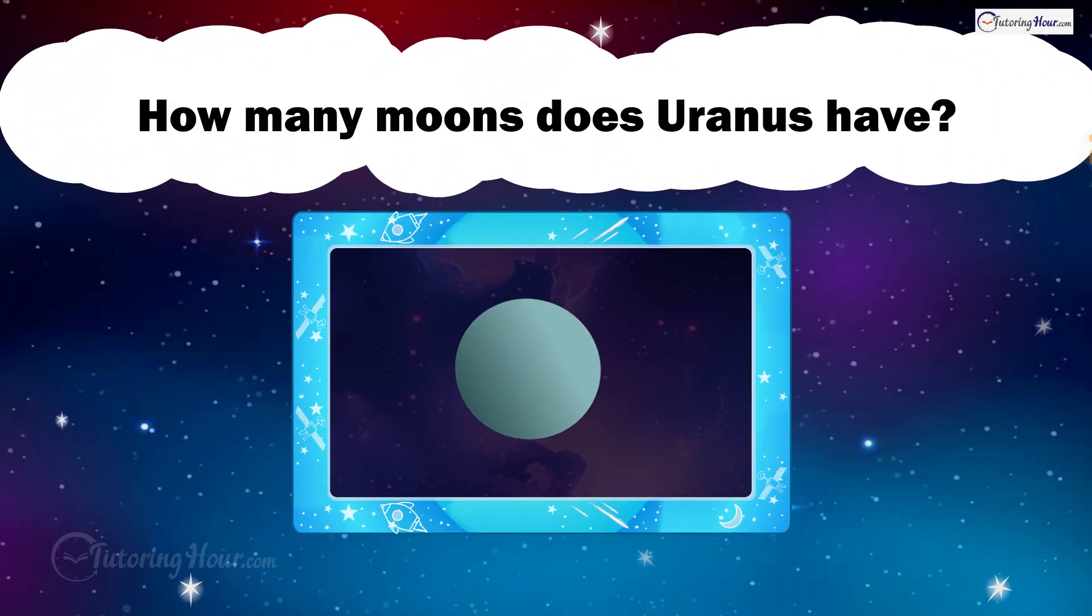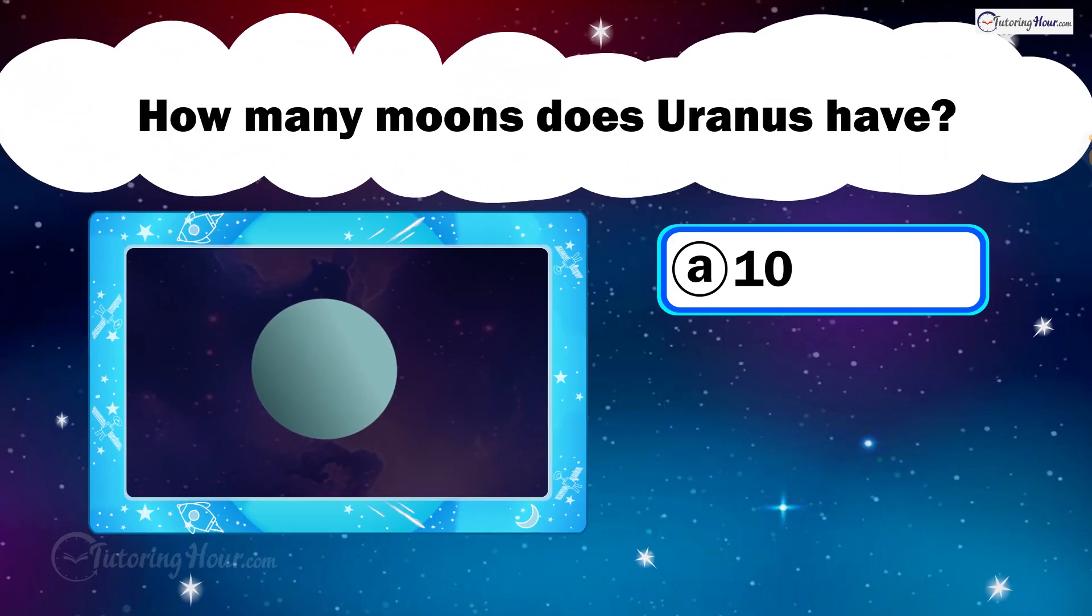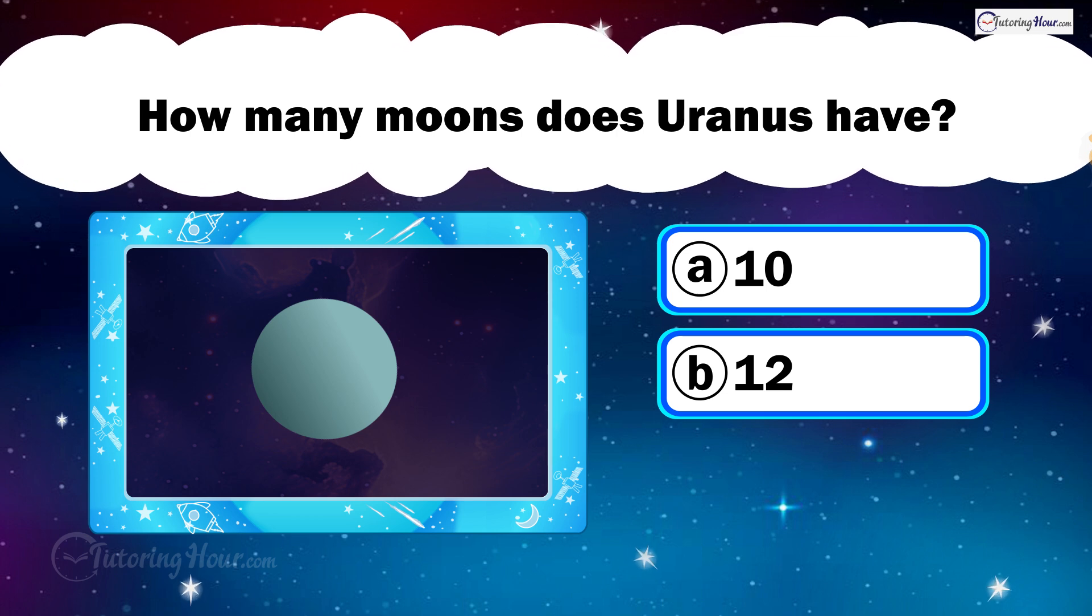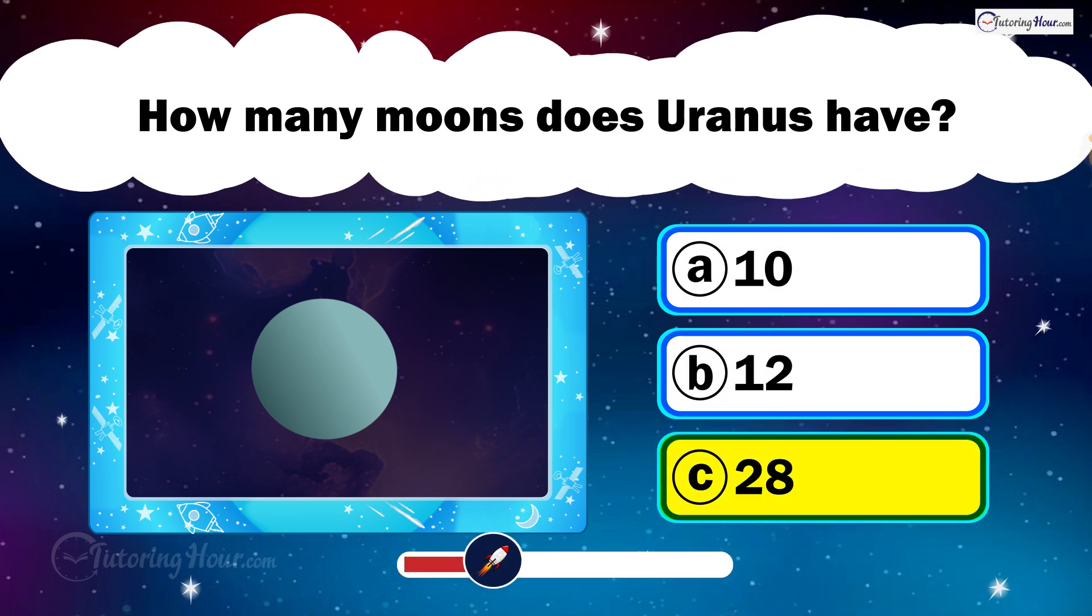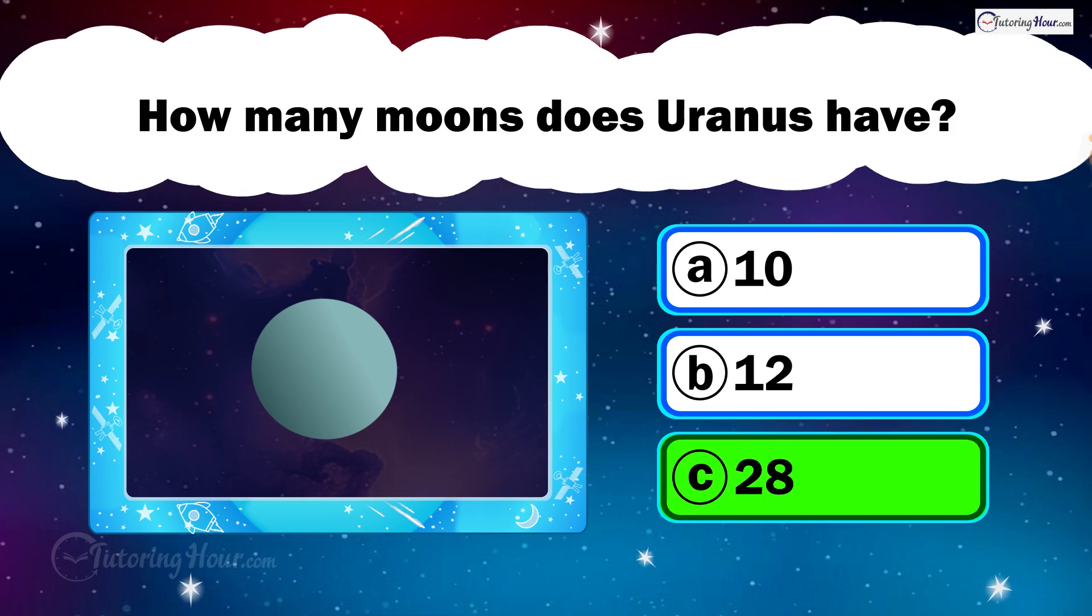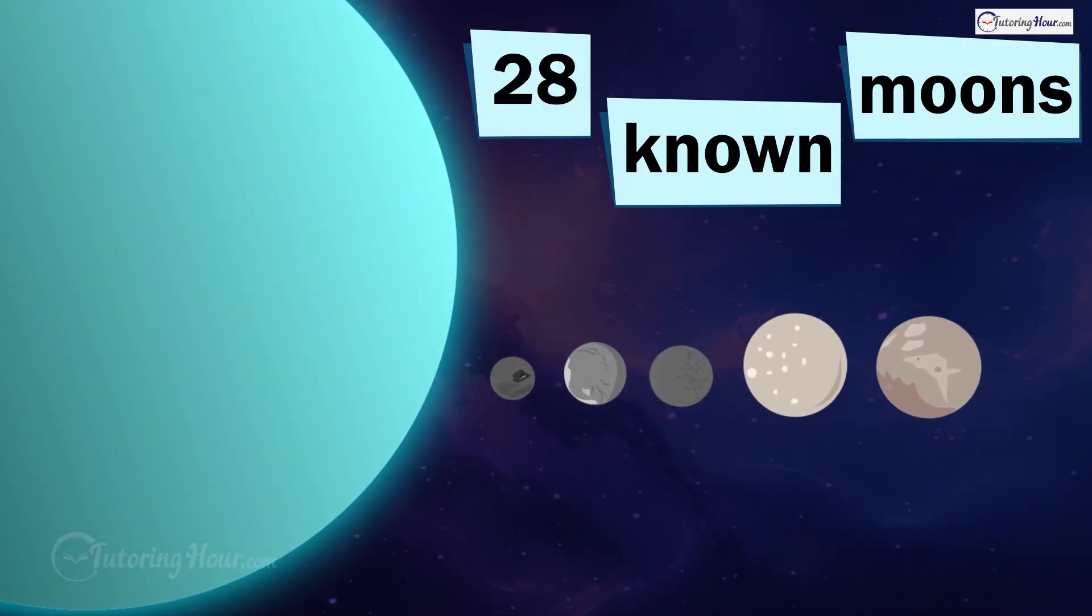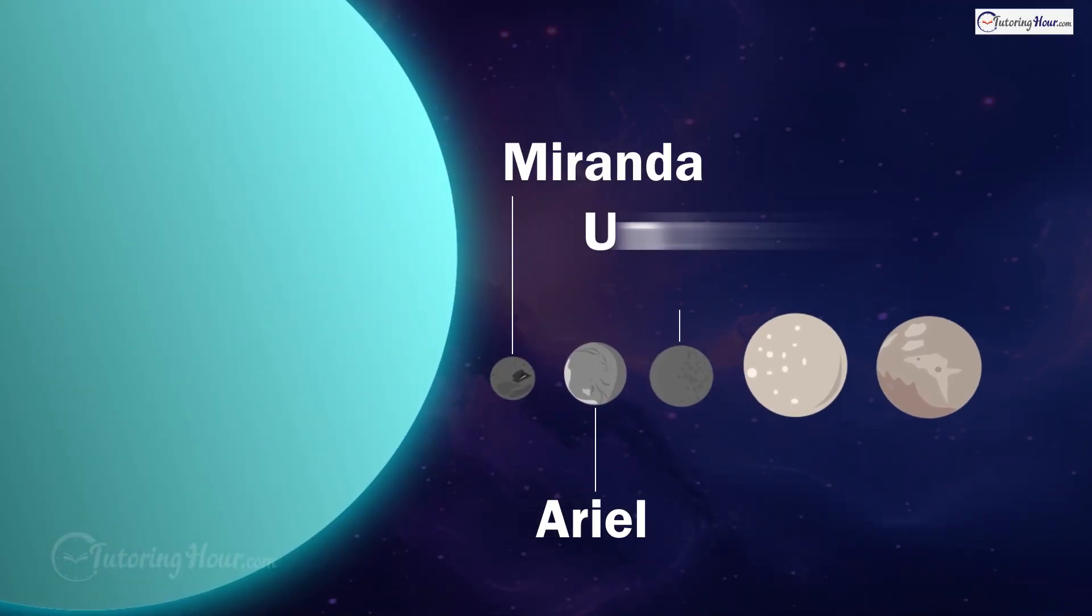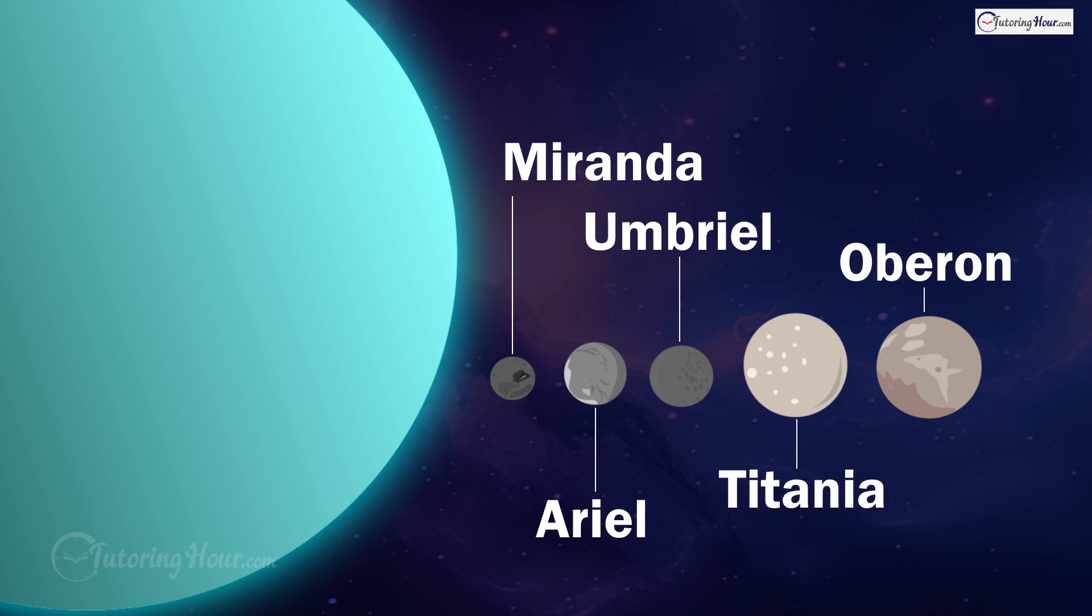How many moons does Uranus have? Is it A. 10, B. 12, or C. 28? Uranus has 28 known moons, including 5 significant moons: Miranda, Ariel, Umbriel, Titania, and Oberon.